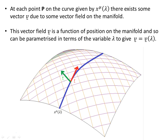At each point P on the curve, given by x^mu of lambda, there exists some vector V due to some vector field on the manifold — shown in green, while the red vector is the tangent vector. V is the vector we're talking about at the point P, and there will be a V at each point along the curve. Since the vector field V is a function of position on the manifold, it can be parameterized in terms of lambda to give V as a function of lambda. The vector field lives on the manifold and can't live off it.